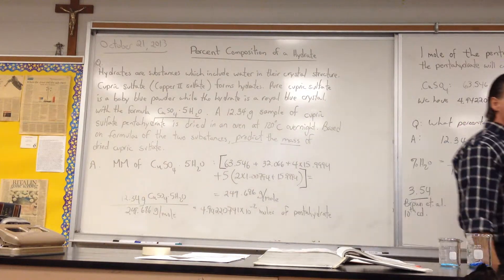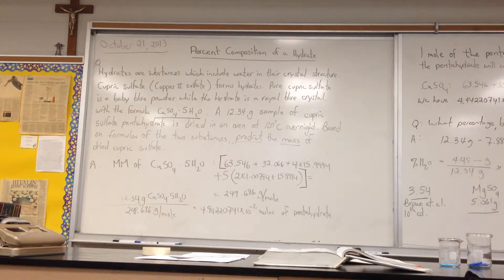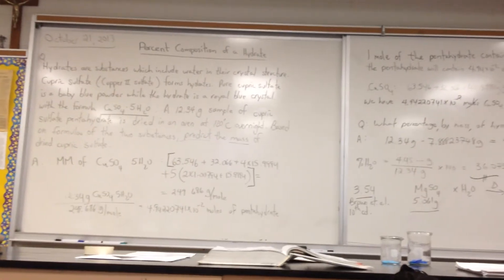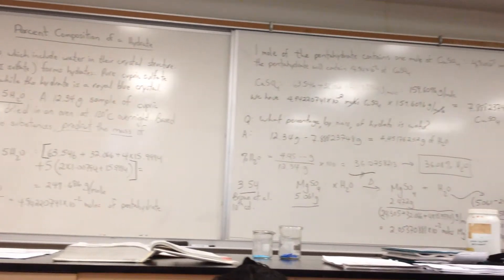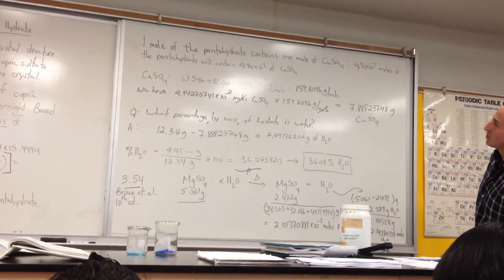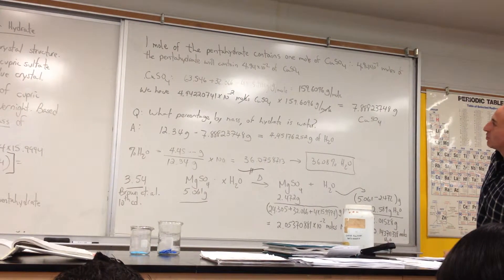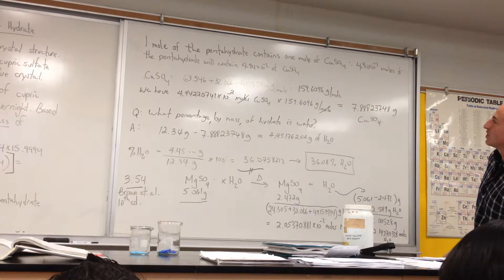Now, moving on to the next board. One mole of the pentahydrate contains one mole of copper sulfate. Therefore, 4.94 times 10 to the minus 2 moles of the pentahydrate will contain 4.94 times 10 to the minus 2 moles of copper sulfate.